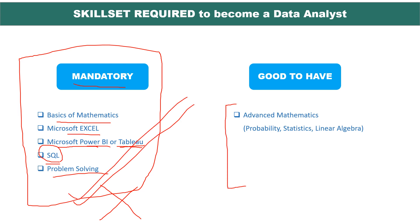Now, good to have. If you want to proceed further and become a senior data analyst and make a career in this, then you want to understand advanced mathematics — probability, statistics, and linear algebra. These are very important concepts. And then we come to Python or R. Python is used to predict models, prepare many things, and clean data. It is a very, very important language.